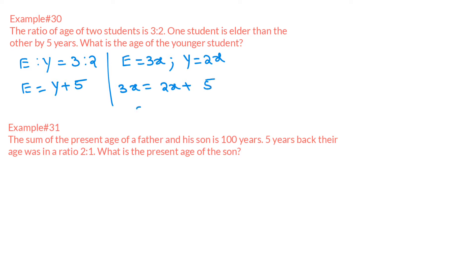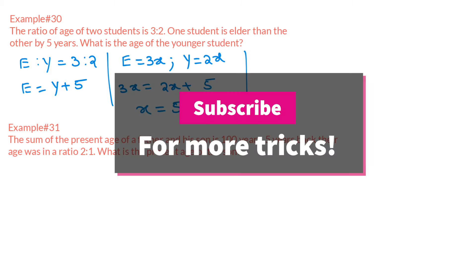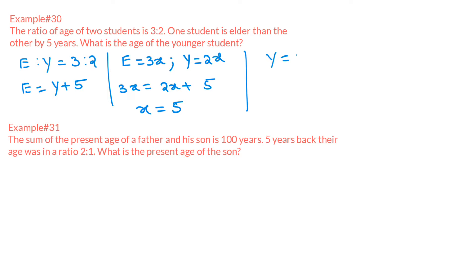Rearranging the expression, we get x = 5. Since we need the age of the younger student, Y = 2x = 2 × 5 = 10 years.